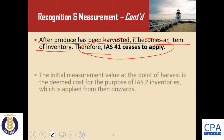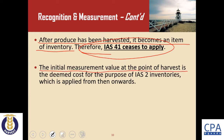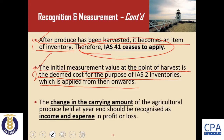The initial measurement value at the point of harvest is deemed the cost of inventories, which is applied from that point onwards. As we know from IAS 2 on inventories, inventories are measured at the lower of cost or net realizable value. On initial recognition, inventories are measured at cost. The change in the carrying amount of agricultural produce held at year end should be recognized as income or expenses in profit or loss.